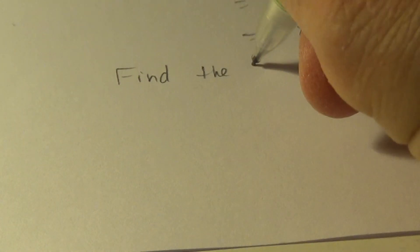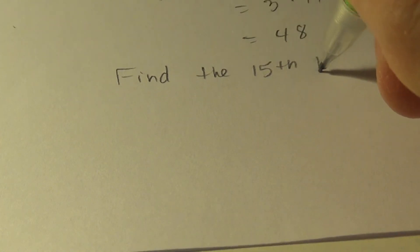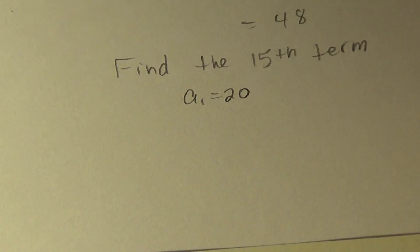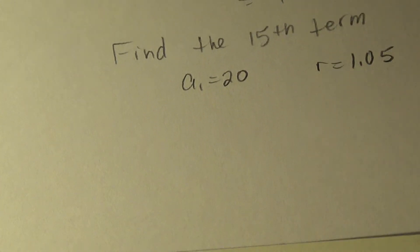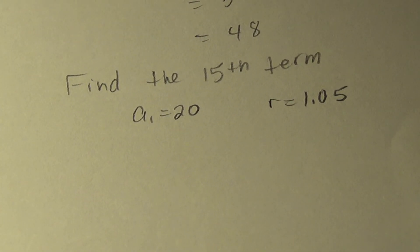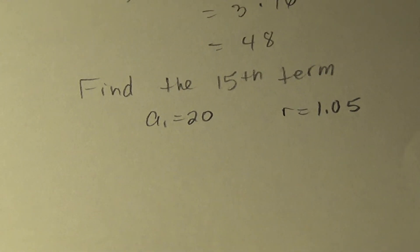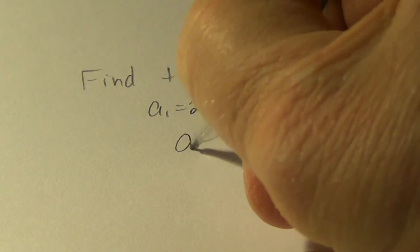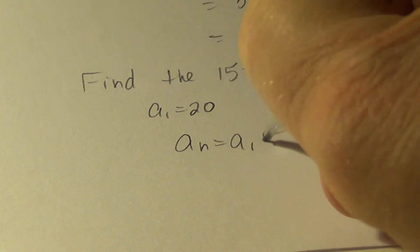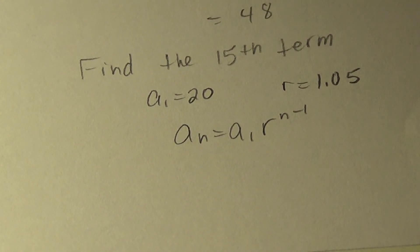Now let's do the one I started before. I want you to find the fifteenth term. And we'll say A sub one equals twenty and the common ratio is 1.05. See if you can work it ahead of me. I'll slow down. I'm going to write down the formula and plug in the numbers where they go.